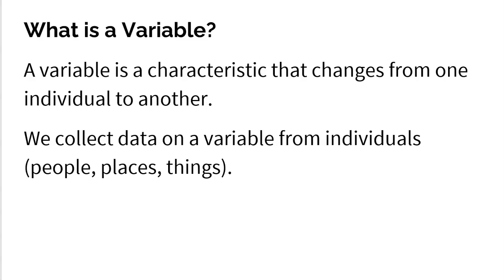So what is a variable? A variable is a characteristic that changes from one individual to another. We collect data on a variable from individuals. It could be people, places, things. Honestly, you could collect variables on anything.